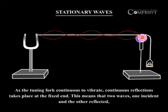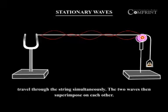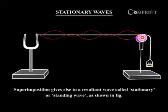This means that two waves, one incident and the other reflected, travel through the string simultaneously. The two waves then superpose on each other. Superposition gives rise to a resultant wave called stationary or standing wave, as shown in the figure.